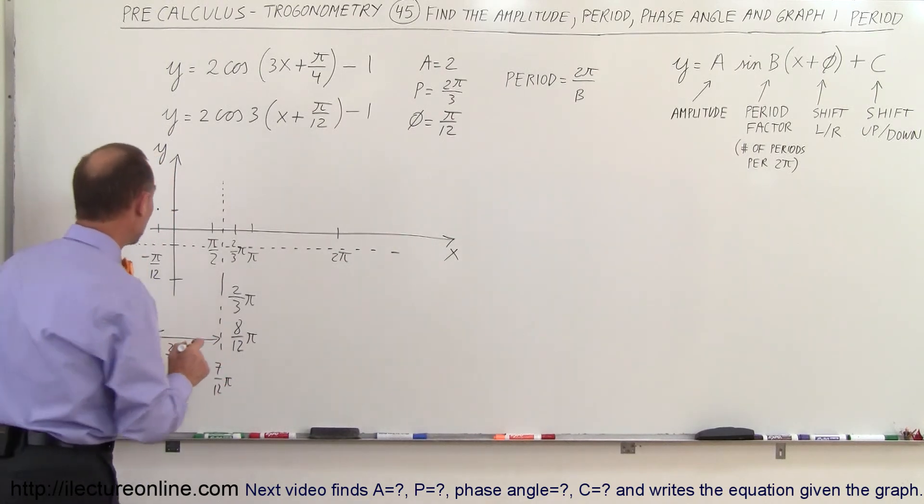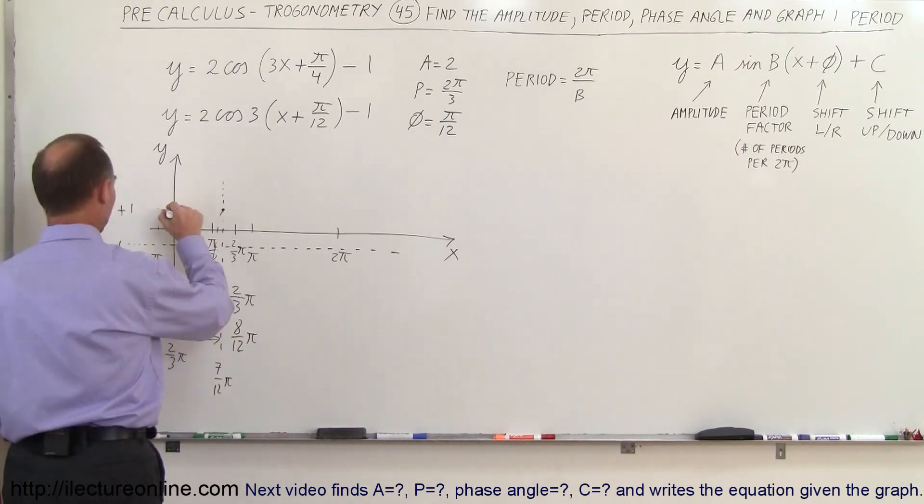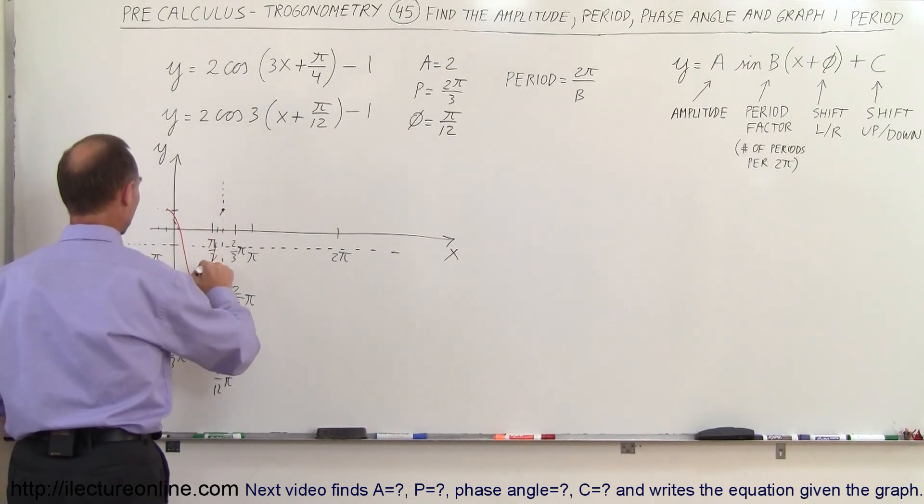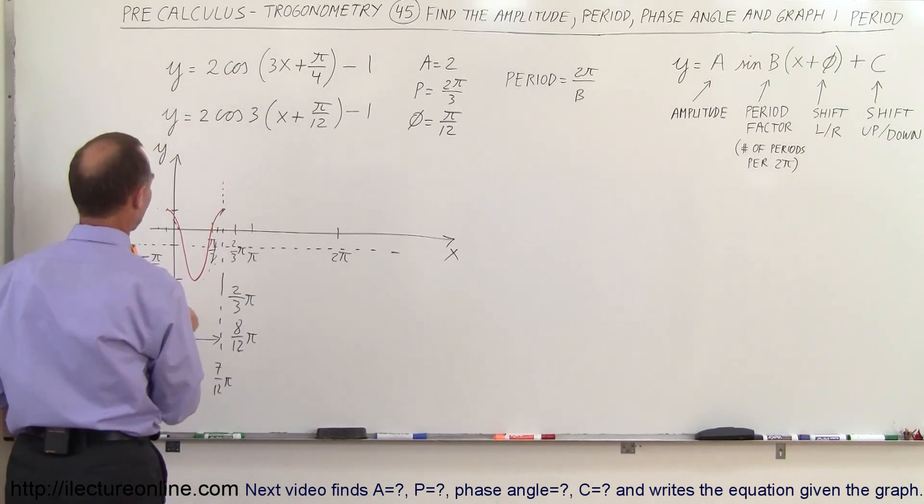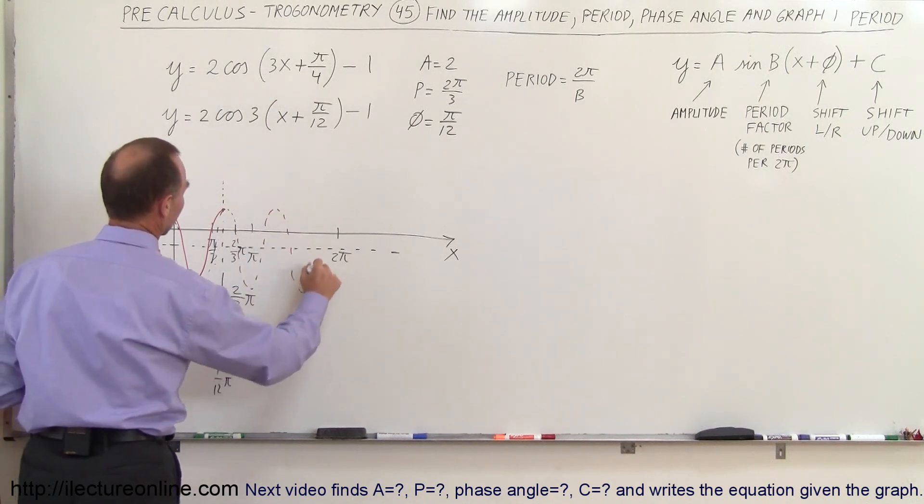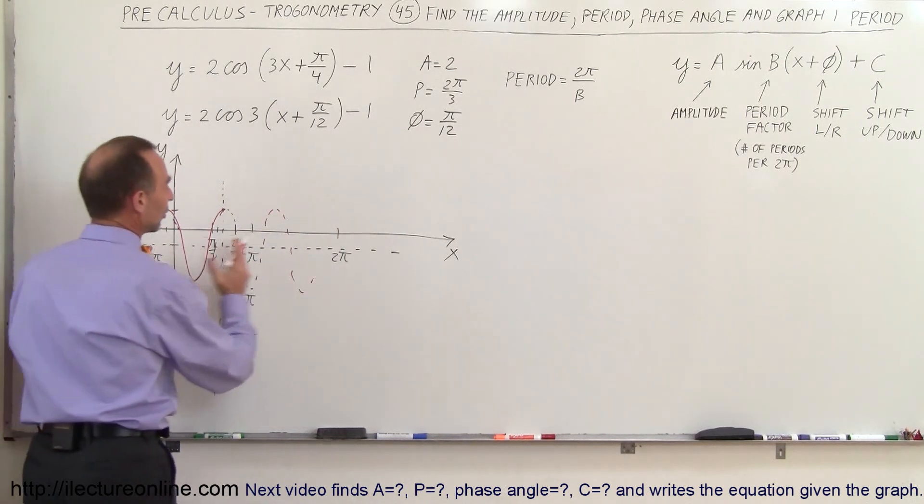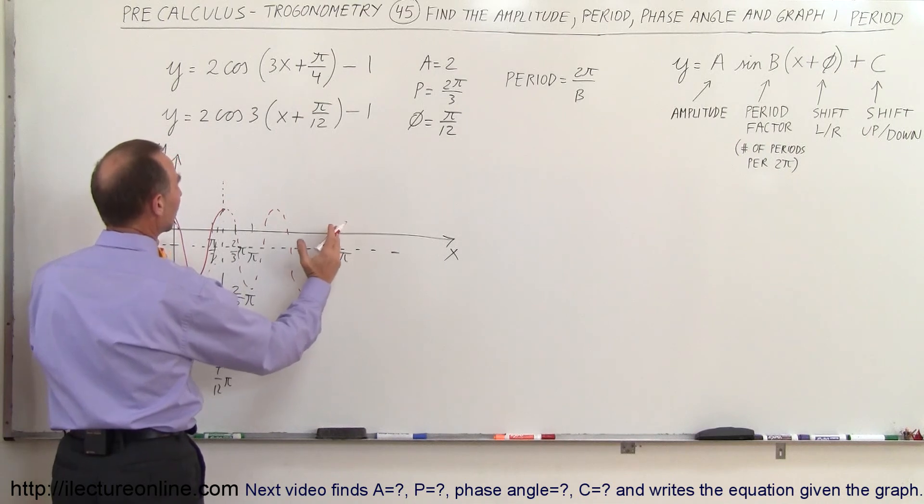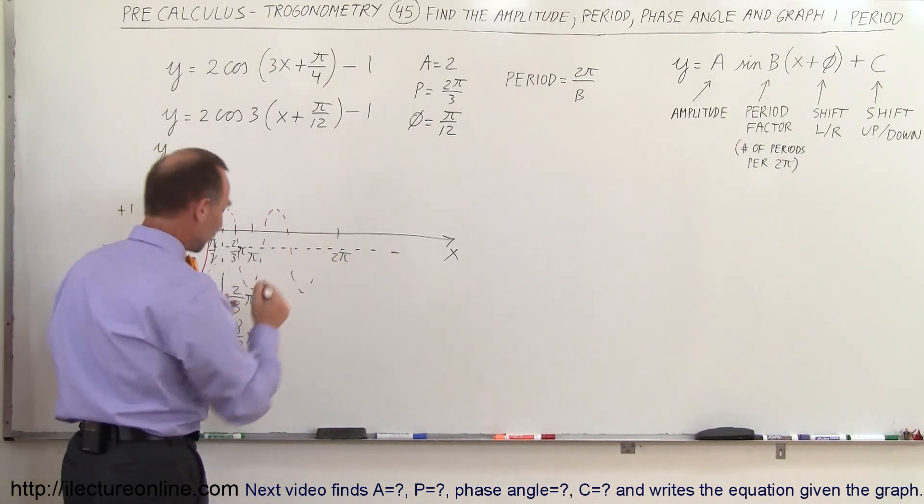Which means we start at this point right so the function is going to look like that, that's much better. And of course it continues on like that and on like that and so forth and so then of course in a 2π distance you would have a total of 3 cycles of the function.